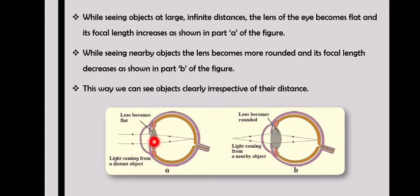While seeing nearby objects, the lens becomes more rounded. You can see the difference—here it is more flat, whereas here it is rounded. Its focal length decreases, as shown in part B of the figure.